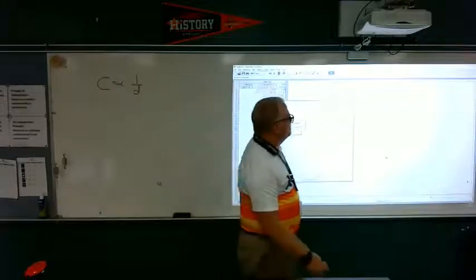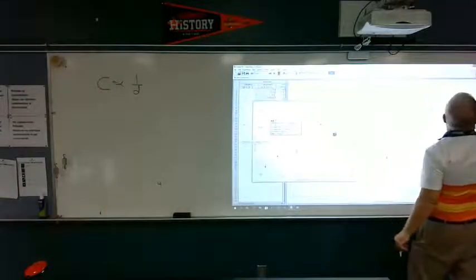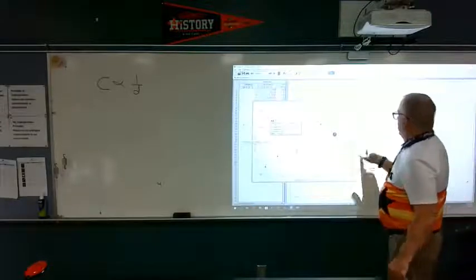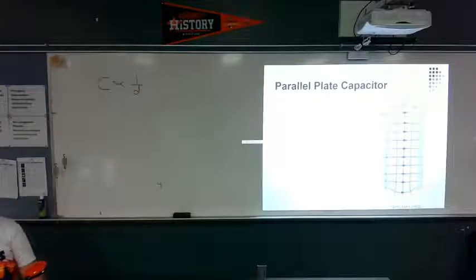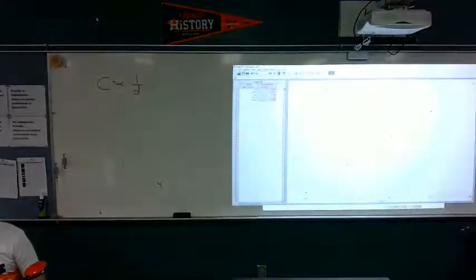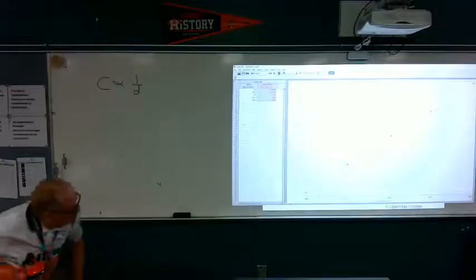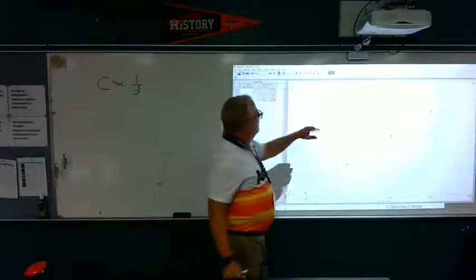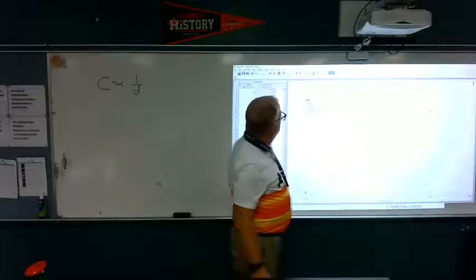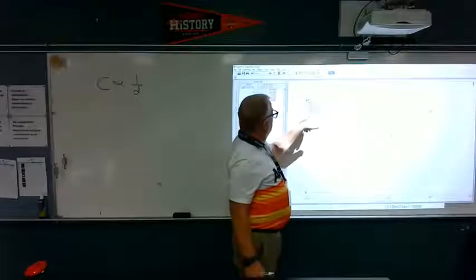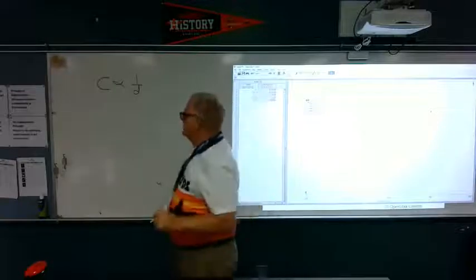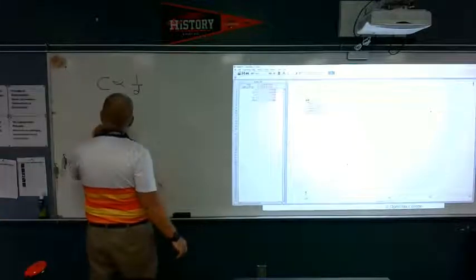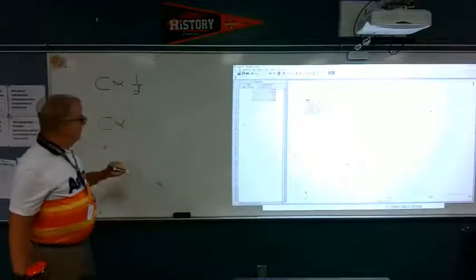Now let's make another graph. This is the result I got when I measured the area of the two plates and kept the plate separation constant. That looks like this — it appears to be linear already. In fact, if we do a linear fit to it, we get that the correlation is even closer: 0.9998. So we see that the capacitance of a parallel plate capacitor is proportional to the area as well.